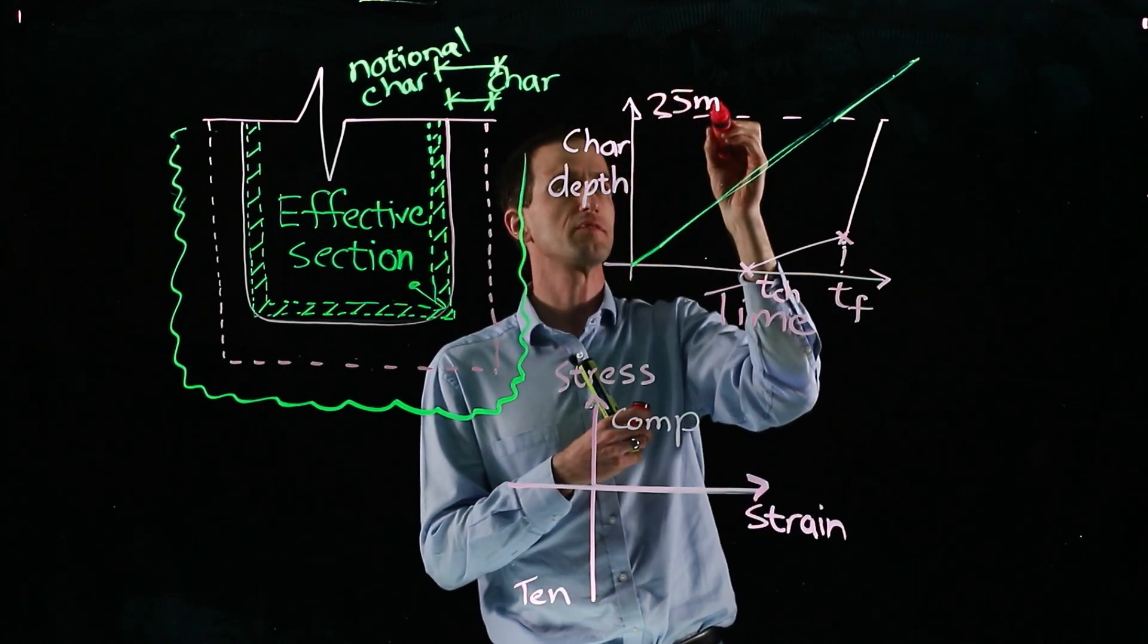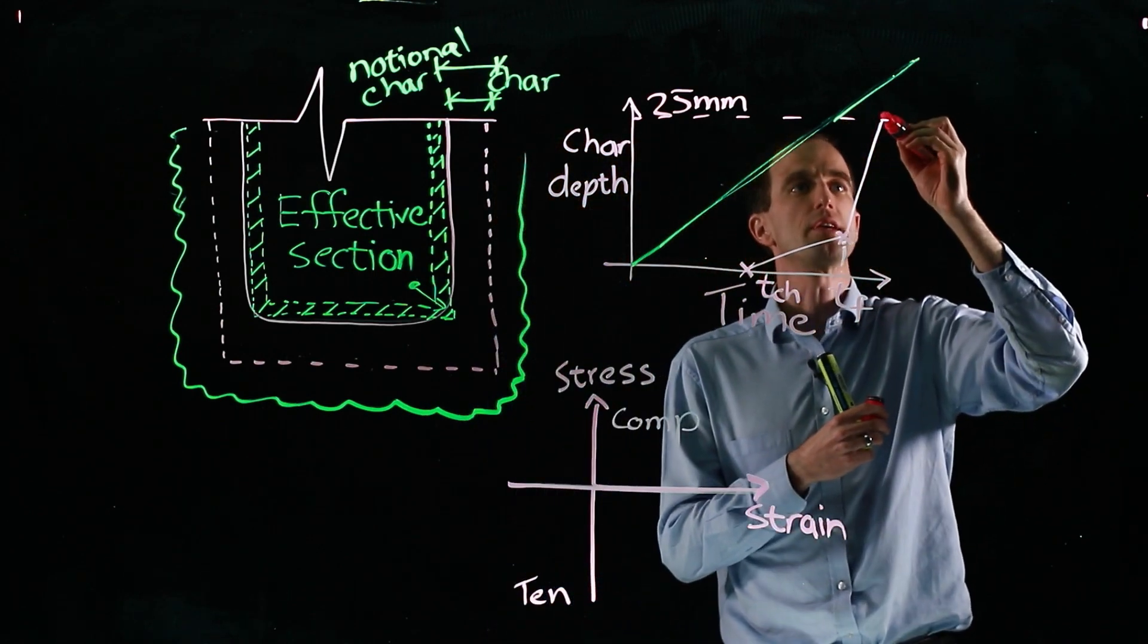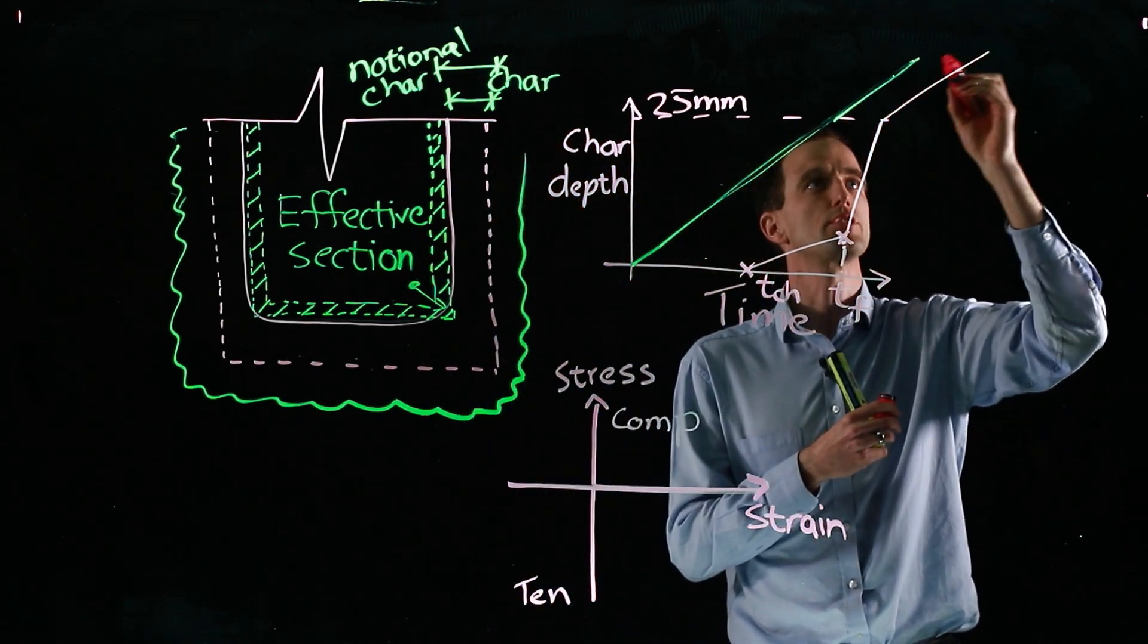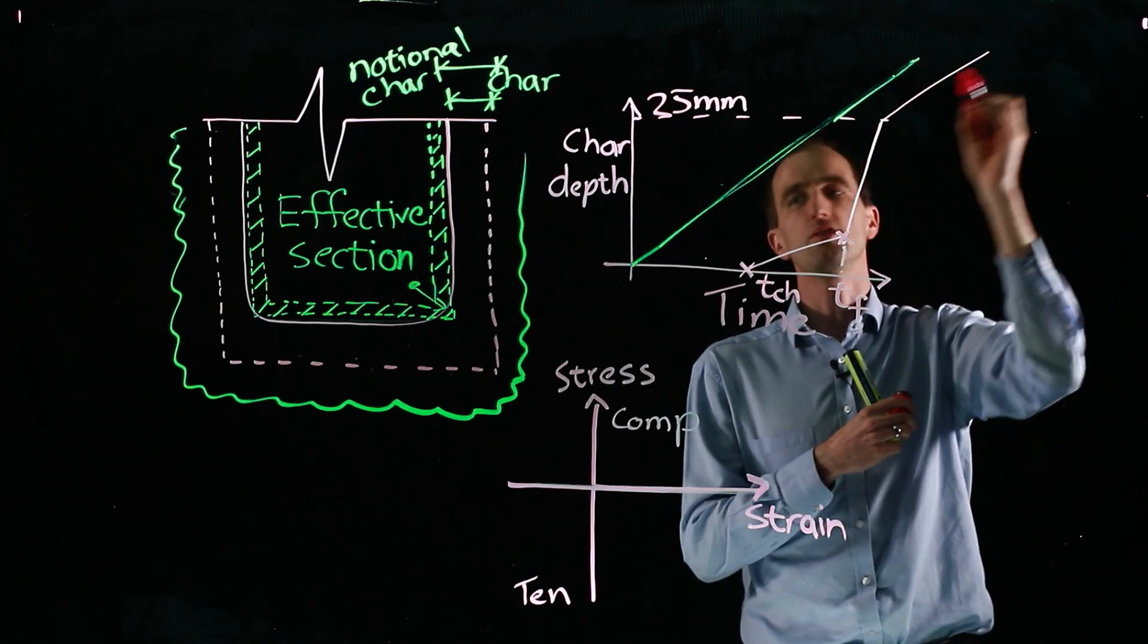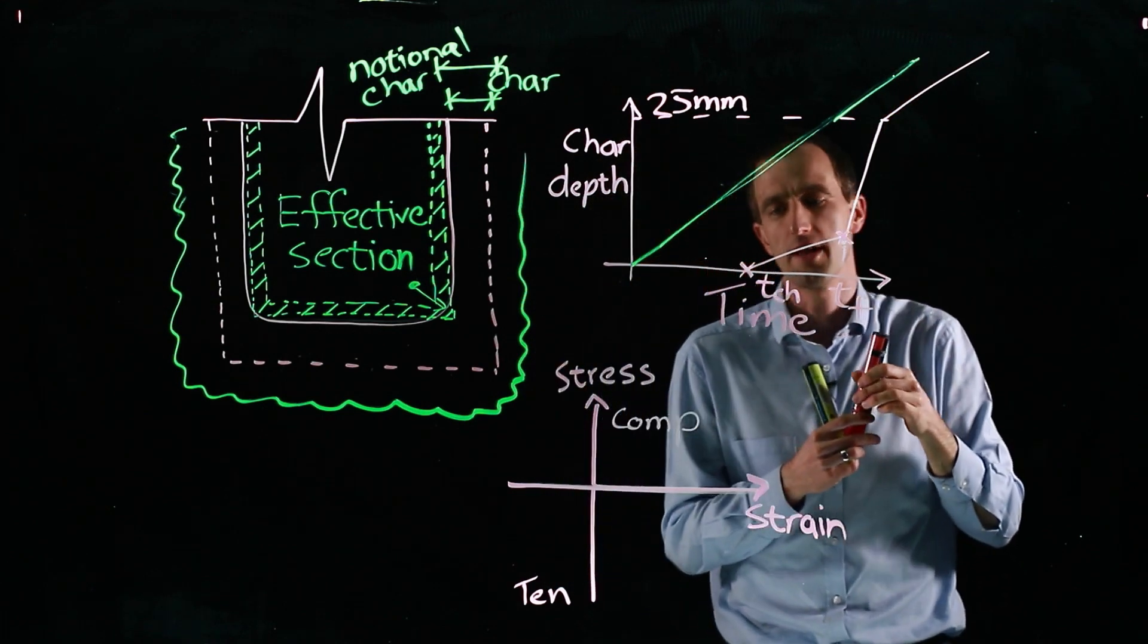So once we have enough material protecting our virgin material that is being affected, then the charring rate returns to normal, and then it continues on at about the same level at the same rate as our linear charring rate there.